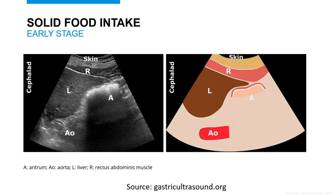Here we have a full stomach. We know that this patient recently ate because the solid material and air intake while the patient was eating is preventing the ultrasound beam from penetrating deeper into the abdomen. So we have the frosted glass pattern, as appreciated by the white line that fades into black dropout on the ultrasound screen. The antrum also appears distended with thin walls.